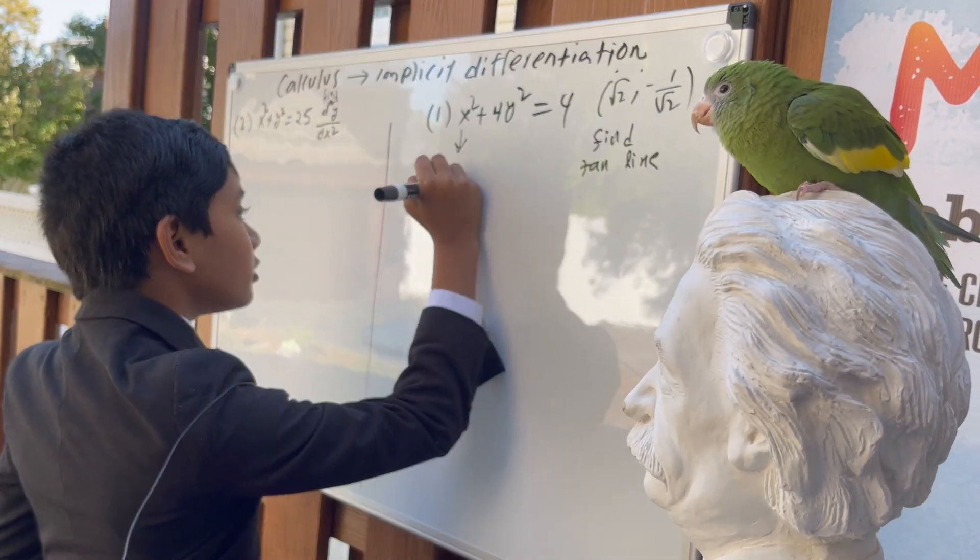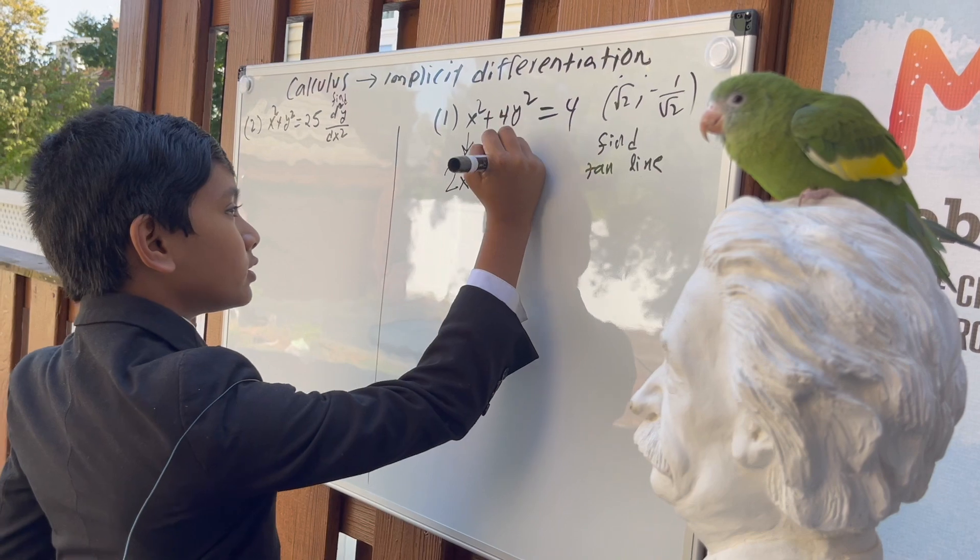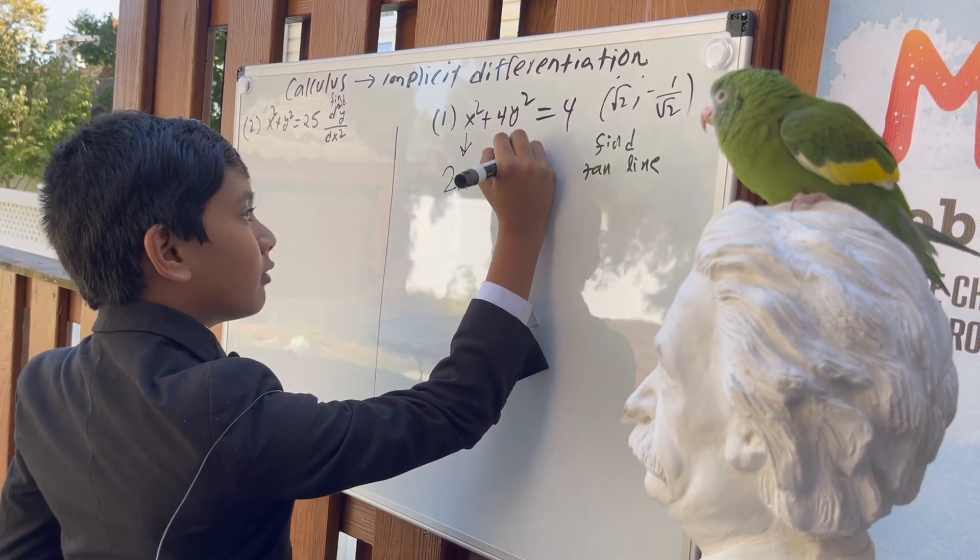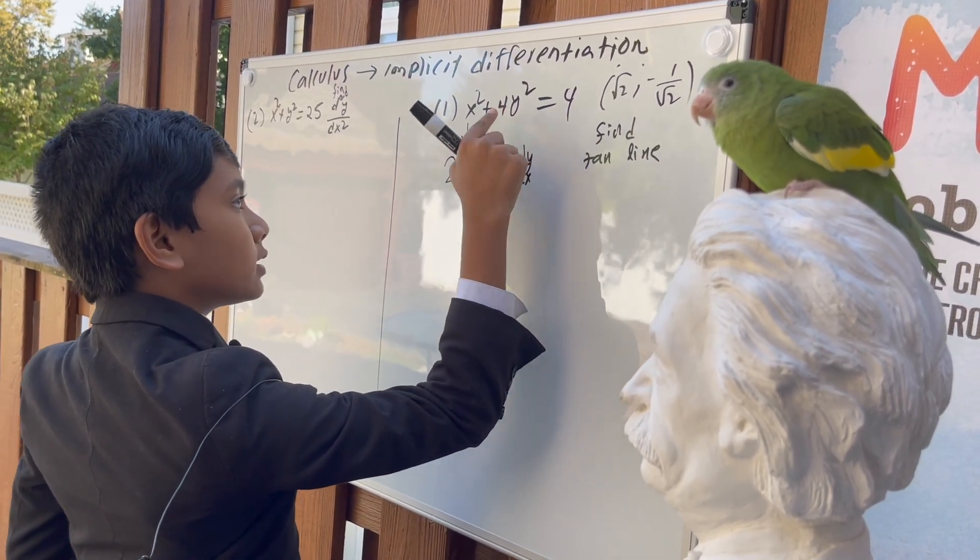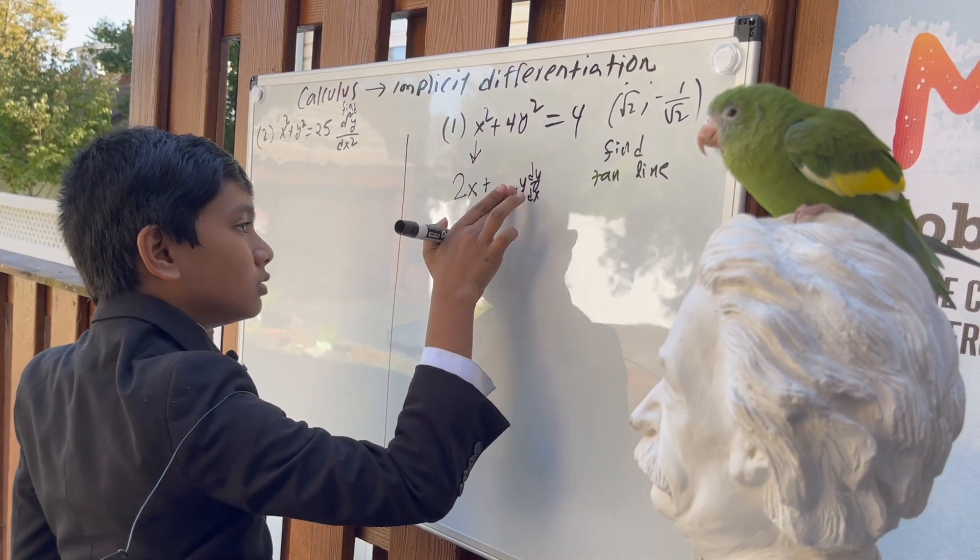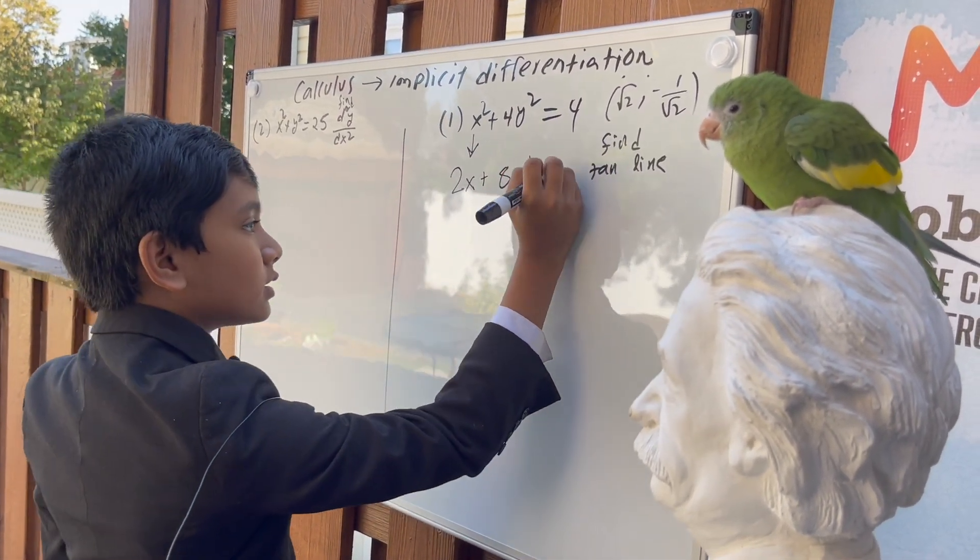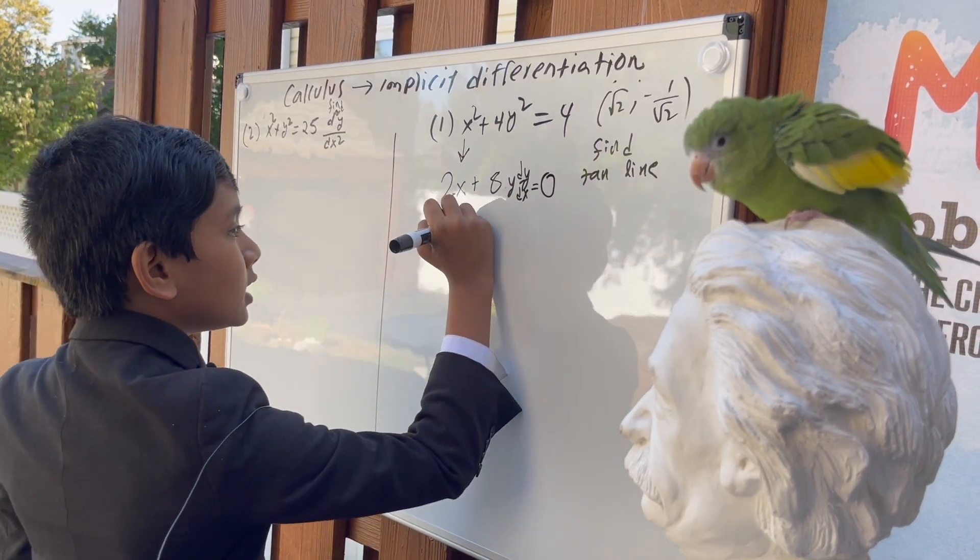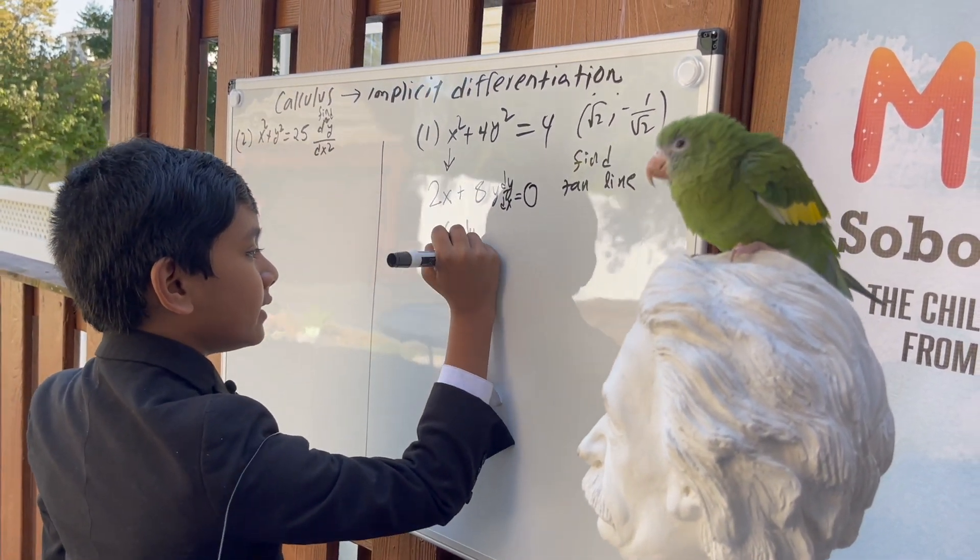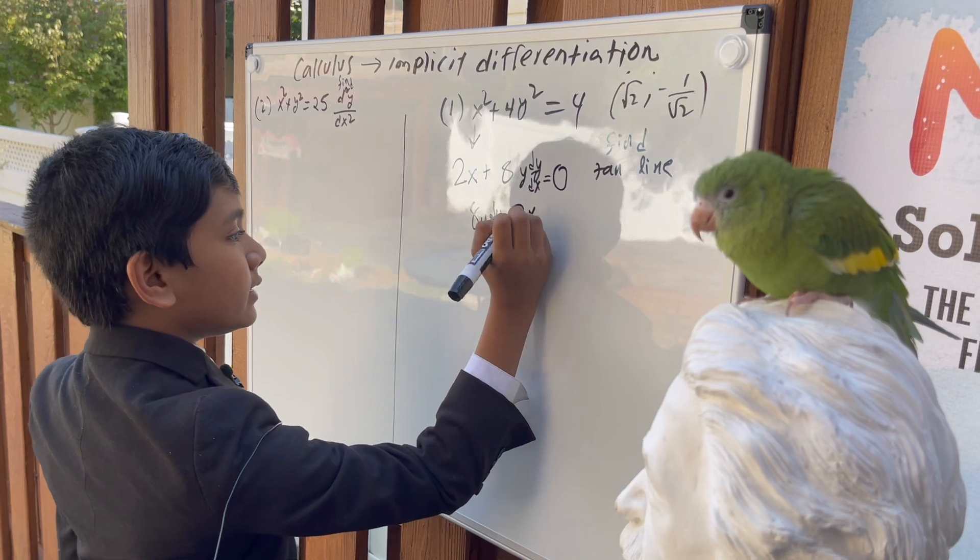You take the derivative of x squared, which becomes 2x. Y squared becomes 2y dy/dx, but then you multiply this 4 by the 2, so you get 8 equals the derivative of the constant, 0. This is fairly easy. You just manipulate the equation.